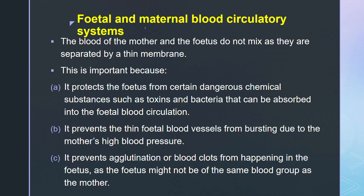The fetal and maternal blood circulatory systems do not mix — they are separated by a thin membrane. This is important for three reasons: first, it protects the fetus from dangerous chemical substances, toxins, or bacteria that could be absorbed into the fetal blood circulation; second, it prevents fetal blood vessels from bursting due to the high blood pressure of the mother; and third, it prevents agglutination or blood clots, since the fetus and mother may not have the same blood group.